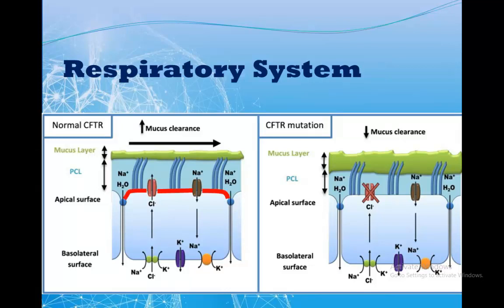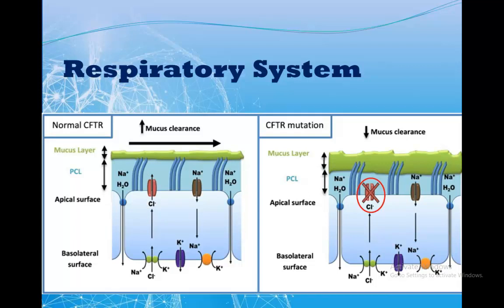In this diagram we can see the epithelial layer with two channels that allow transport of ions in and out of cells. Sodium passes from the lumen into the cell via one channel, carrying with it water. Chloride moves from the cell into the lumen via the other channel — called the CFTR channel. In cystic fibrosis, a mutation in the CFTR gene causes the CFTR channel to not function properly, so chloride doesn't leave the cell and builds up within it. Since chloride is negatively charged, the cell becomes negatively charged, causing more sodium to enter the cell and drag more water with it, resulting in a thick mucus plug.